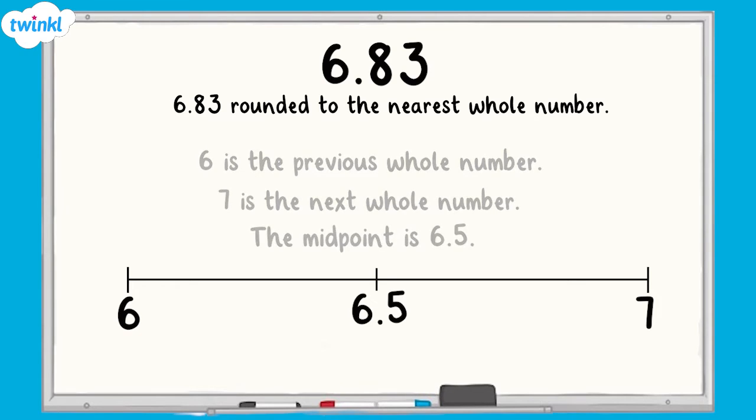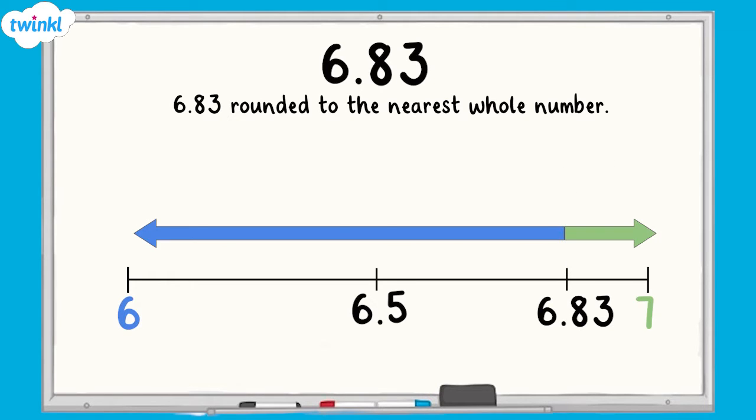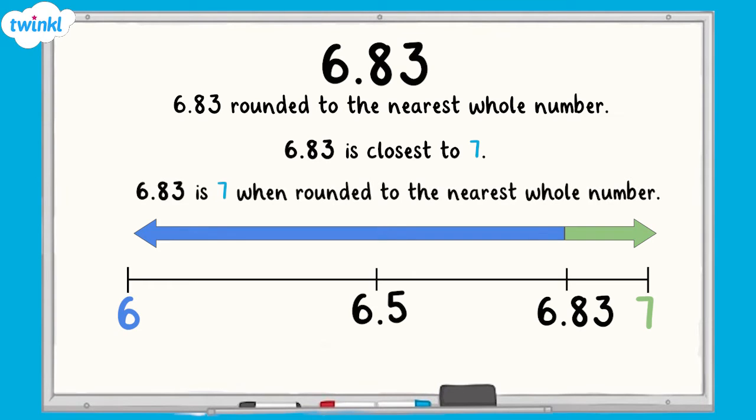Then we place 6.83 in approximately the correct place on the number line. We can see that 6.83 is closest to 7 because it's to the right of the midpoint. Therefore, 6.83 is 7 when rounded to the nearest whole number.